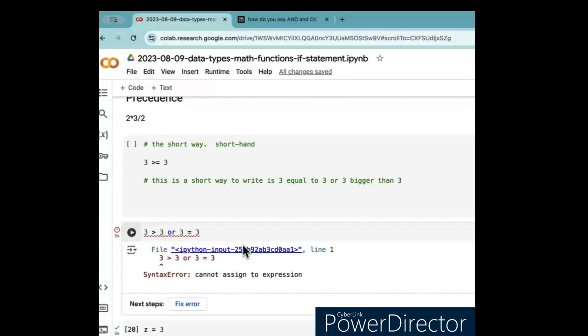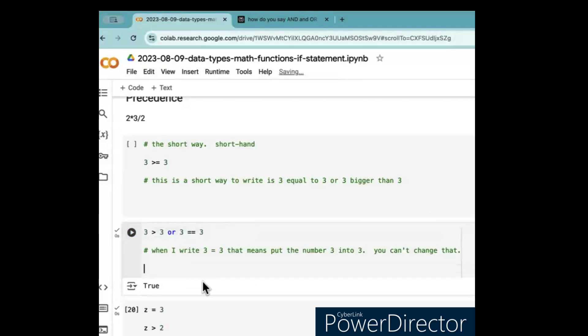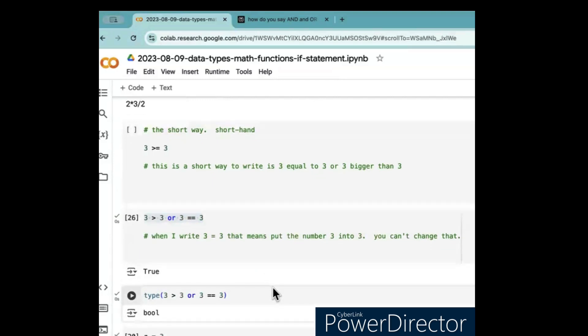Do you want to see what error I have? This is a very common error. Probably because of this equal mark, it must be like two or three of them. You see, the problem with this is with that. See, when I write when I write three equals three, that means put the number three into three. You can't change that, not allow. Well, so I needed to put this. Sure. Now, again, what type of statement is this? So, Berlin. It's the Boolean. Yeah.